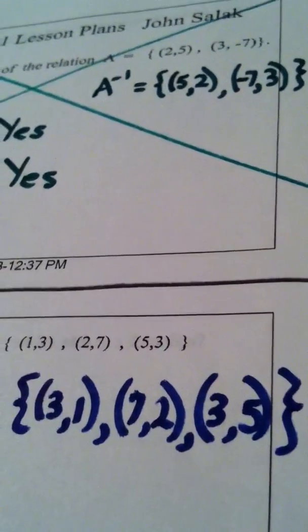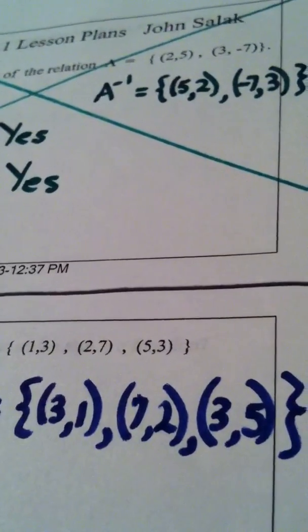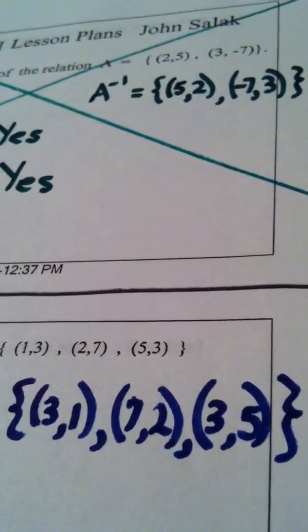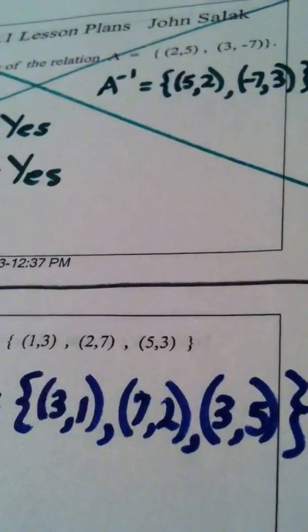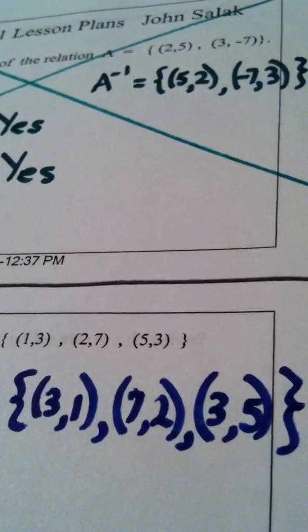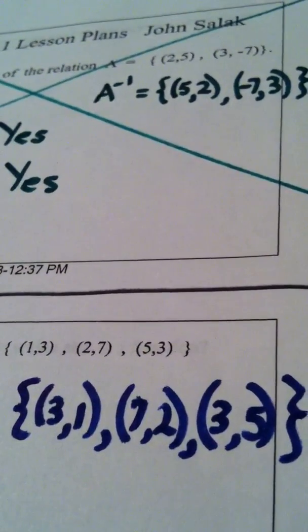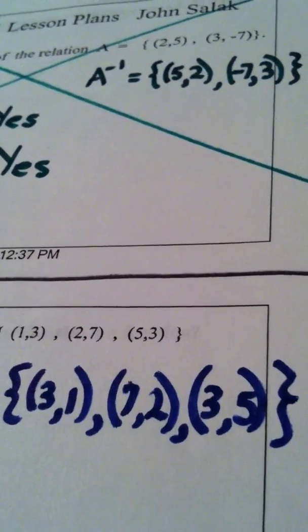That ain't happening, people. You can't have that happen. So, to determine if something is a function, you look at the x value, and the x value is never allowed to change its mind, i.e., it's never allowed to cheat.